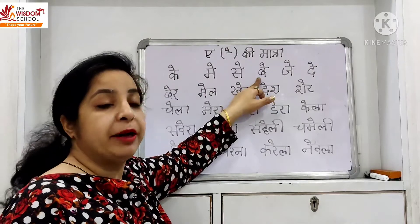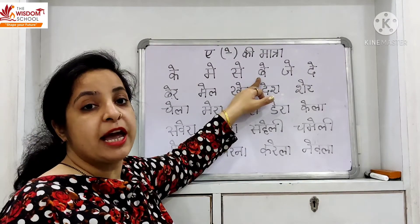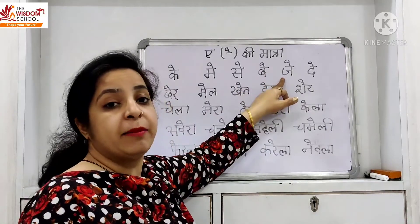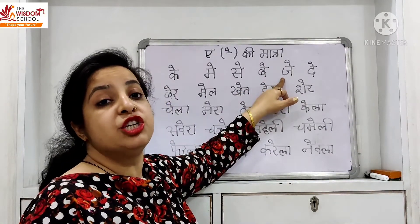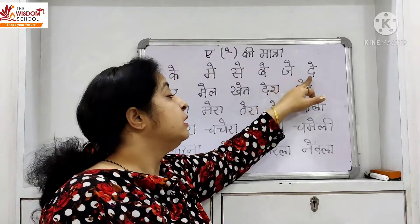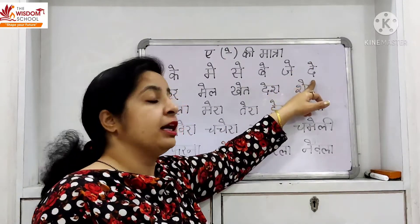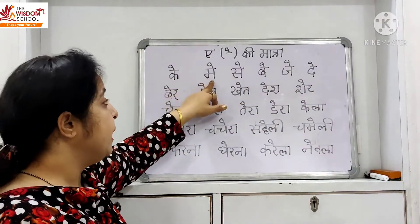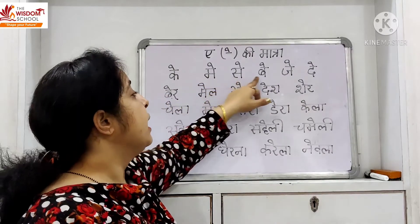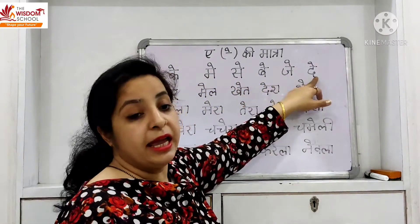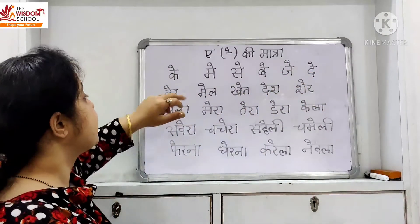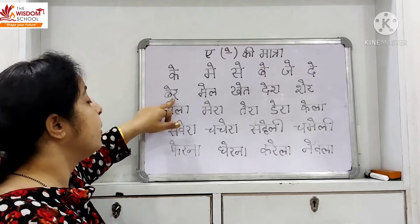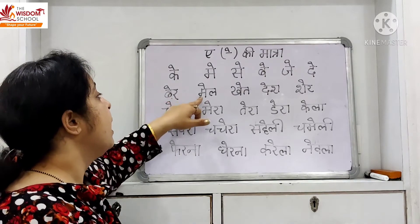Humara next vienjan hai Ba. Ba, par A ki matra lag jayegi, toh woh ban jayega? Ba. Kya ban jayega? Ba. J — J ke oopar eki matra kya ban jayega bita? Ja. Kya ban jayega? Ja. Da — agar eki matra lag jayegi, woh ban jayega? Da. Kya ban jayega? Da. Next kya hai bachche? Ba ke oopar eki matra ban gaya? Ba. Kya ban gaya? Ba.